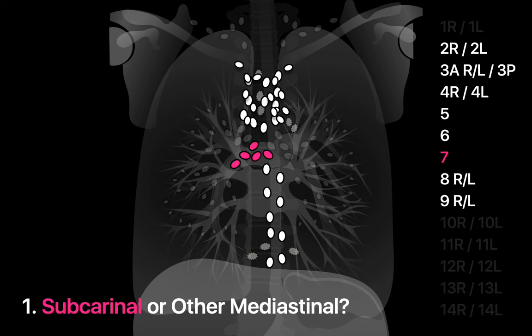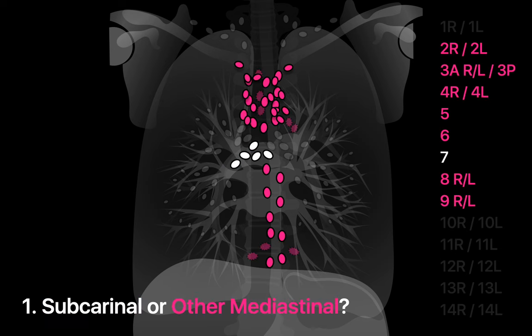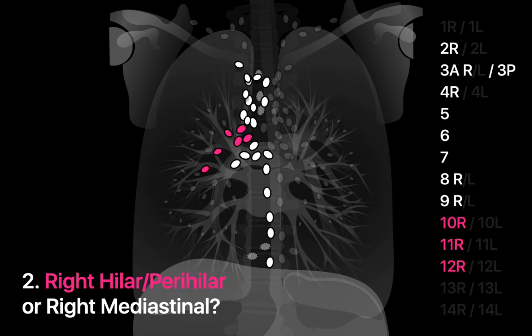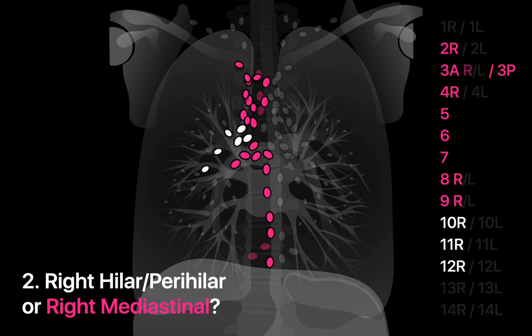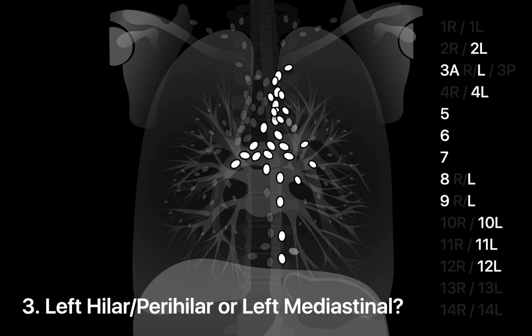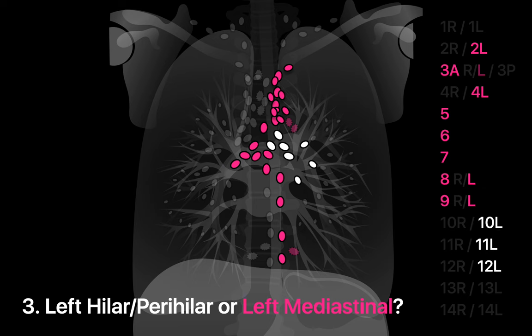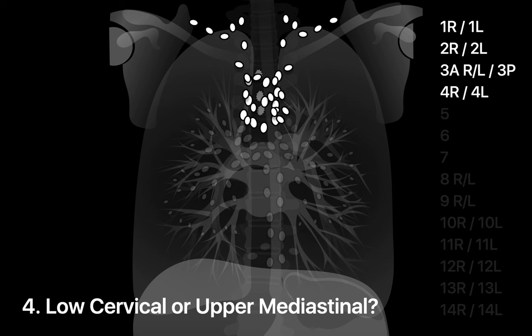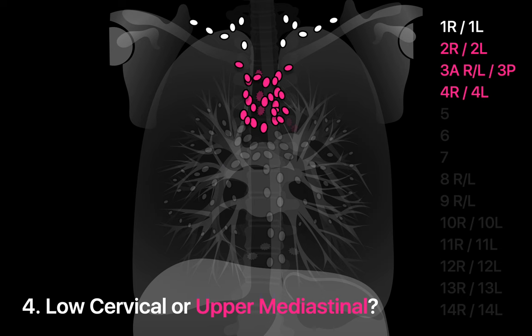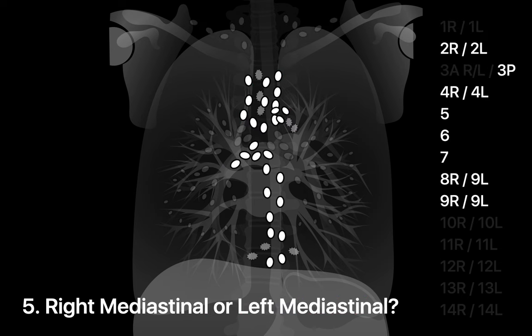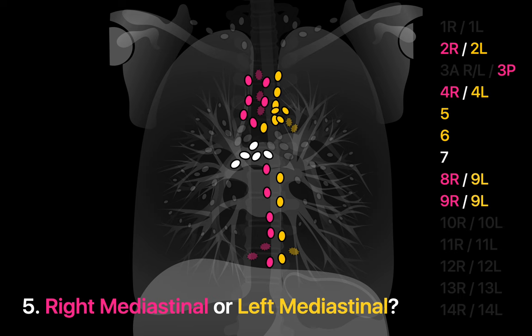Number one: can you reliably distinguish subcarinal station 7 mediastinal lymph nodes from other mediastinal lymph nodes on CT? Number two: can you reliably distinguish right hilar and perihilar station 10R through 12R lymph nodes from right mediastinal lymph nodes? Number three: can you do the same for the left side? Number four: can you distinguish low cervical station 1 lymph nodes from upper mediastinal lymph nodes? And five: can you distinguish right mediastinal from left mediastinal lymph nodes on CT?